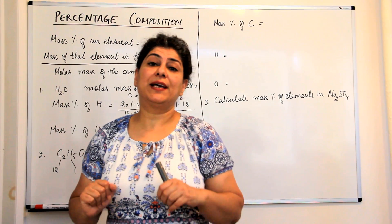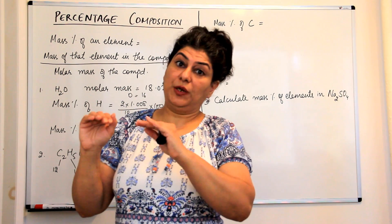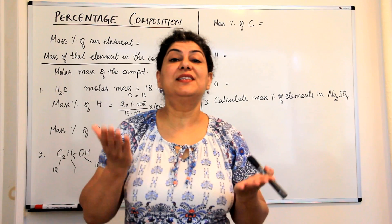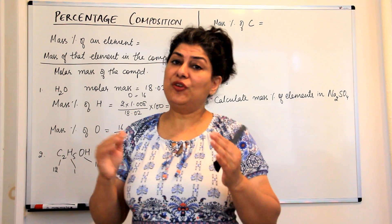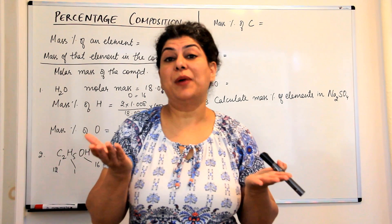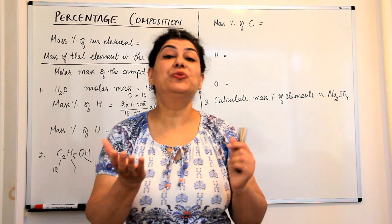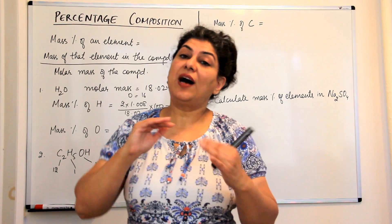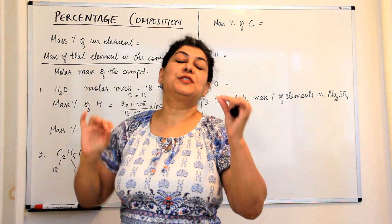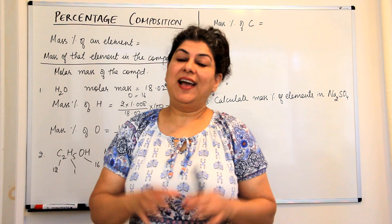Sometimes you have an impure sample and you know what the sample is, but you want to find out whether it's pure or not. You find out the percentage composition of the elements, and if the percentages don't match the expected values for the compound, you conclude that the sample is impure. Either way, you need to find out the percentage composition of a compound.